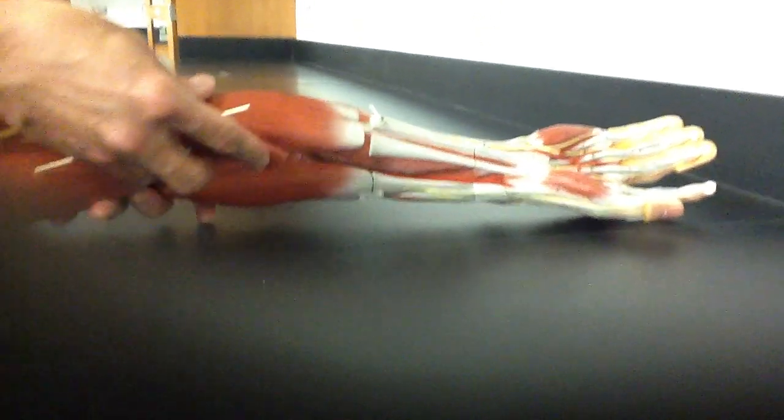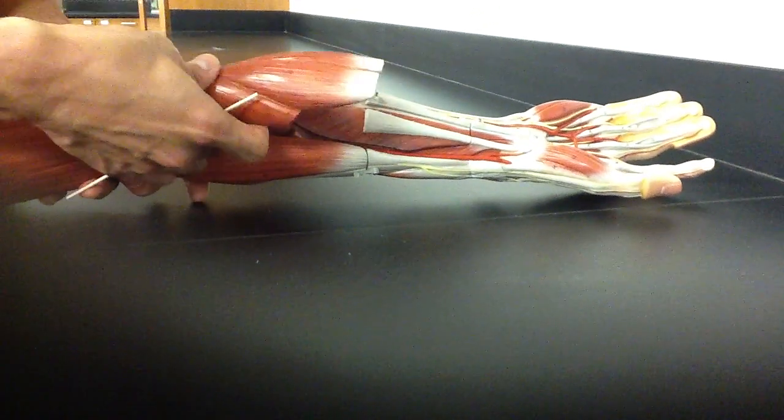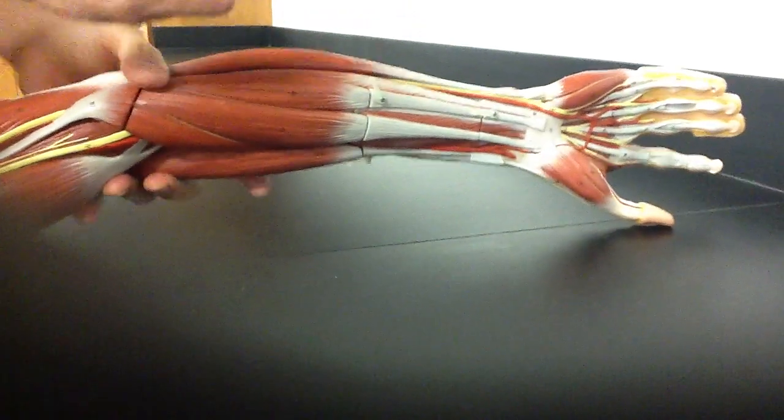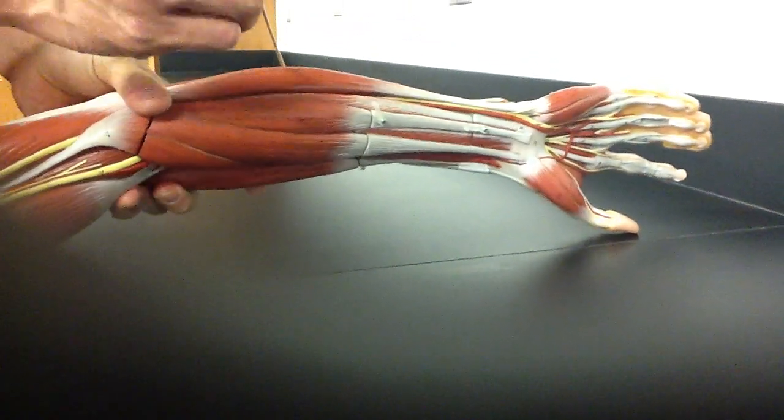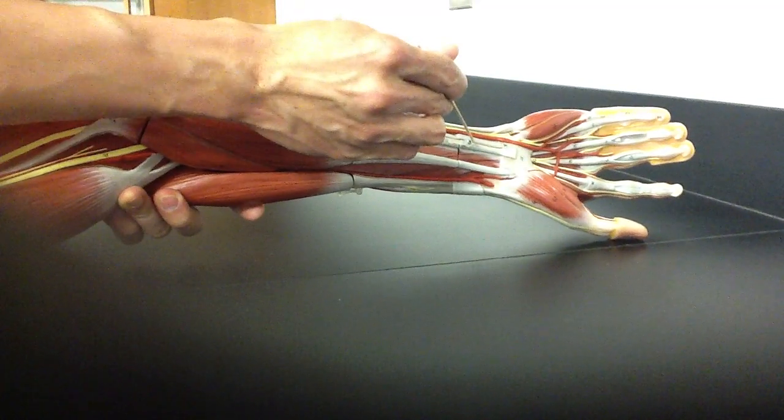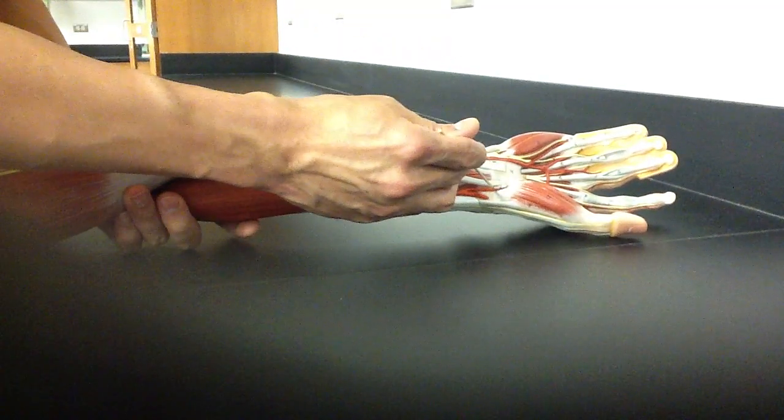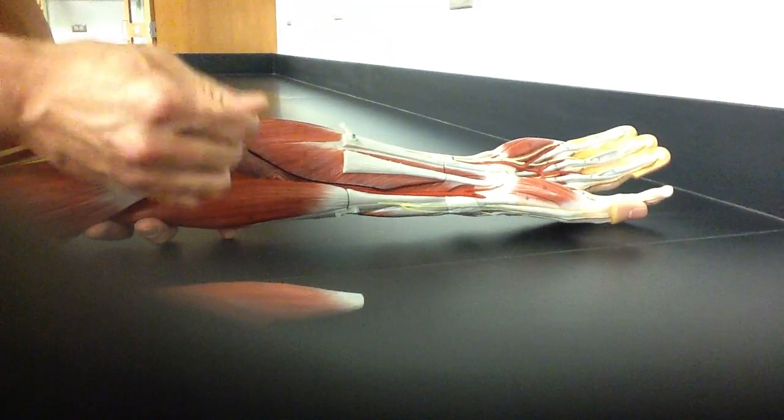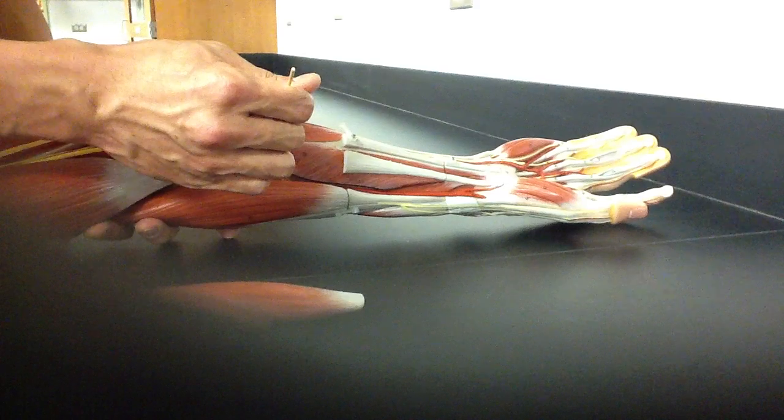So let's go over the superficial layer for review, the superficial layer of the forearm, starting from the ulna. Flexor carpi ulnaris, to the palmaris longus, to the flexor carpi radialis, to the pronator teres, and directly underneath that would be the flexor digitorum superficialis.